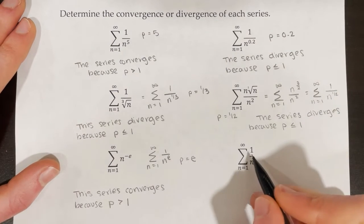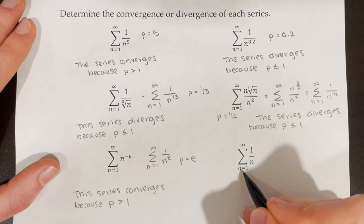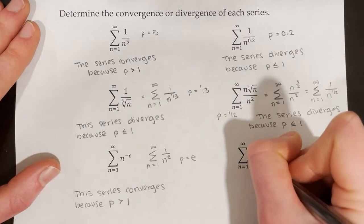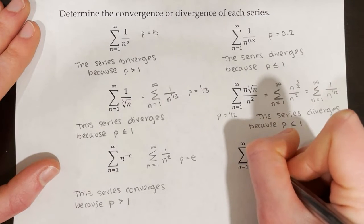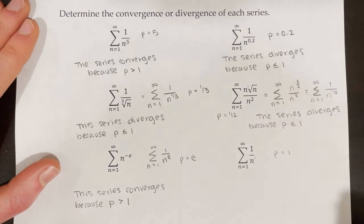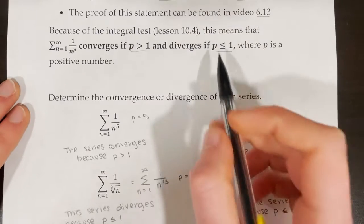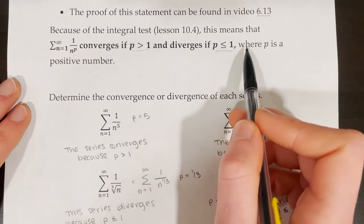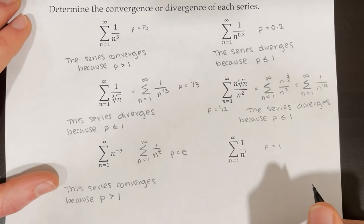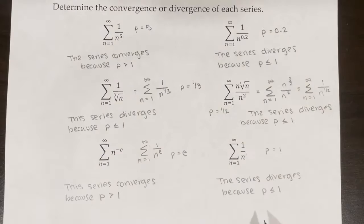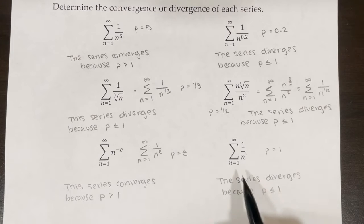In our last one on this page, we have the series from n equals 1 to infinity of 1 over n. What's p in this case? Well, this is really n to the power of 1, so p is equal to 1. Therefore this series diverges because p is less than or equal to 1 — in this case, it's actually equal to 1. This is a specific type of p-series called a harmonic series.